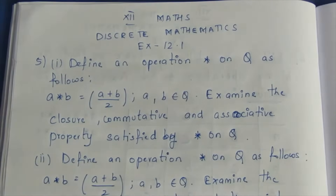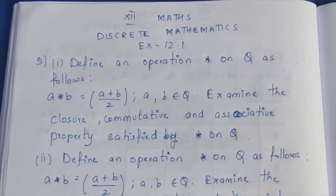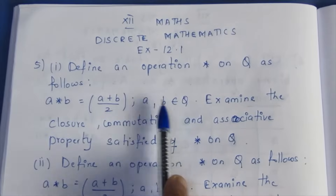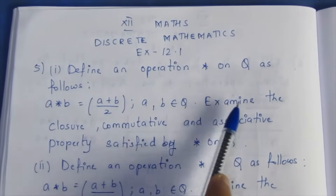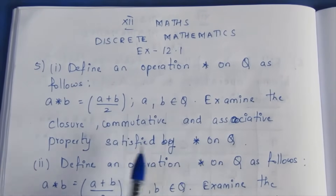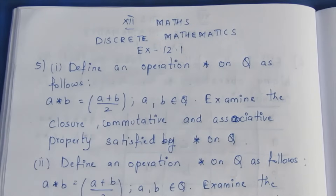Hello viewers, I am Mike Lee. This is 12th standard discrete mathematics exercise 12.1, 5th sum. The question defines an operation star on Q, where Q is rational numbers. The formula is: a star b equals a plus b by 2, where a and b belong to Q. We have to examine the closure property, commutative property, and associative property satisfied by star on Q.